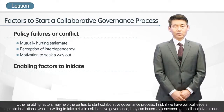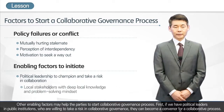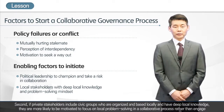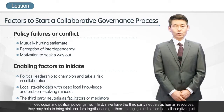Other enabling factors may help the parties to start a collaborative governance process. First, if we have political leaders in public institutions who are willing to take a risk in collaborative governance, they can become a convener for a collaborative process. Second, if private stakeholders include civic groups who are organized, locally based, and have deep local knowledge, they are more likely to focus on local problem-solving rather than engage in ideological and political power games. Third, if we have third-party neutrals as human resources, they may help to bring stakeholders together and engage each other in a collaborative spirit.